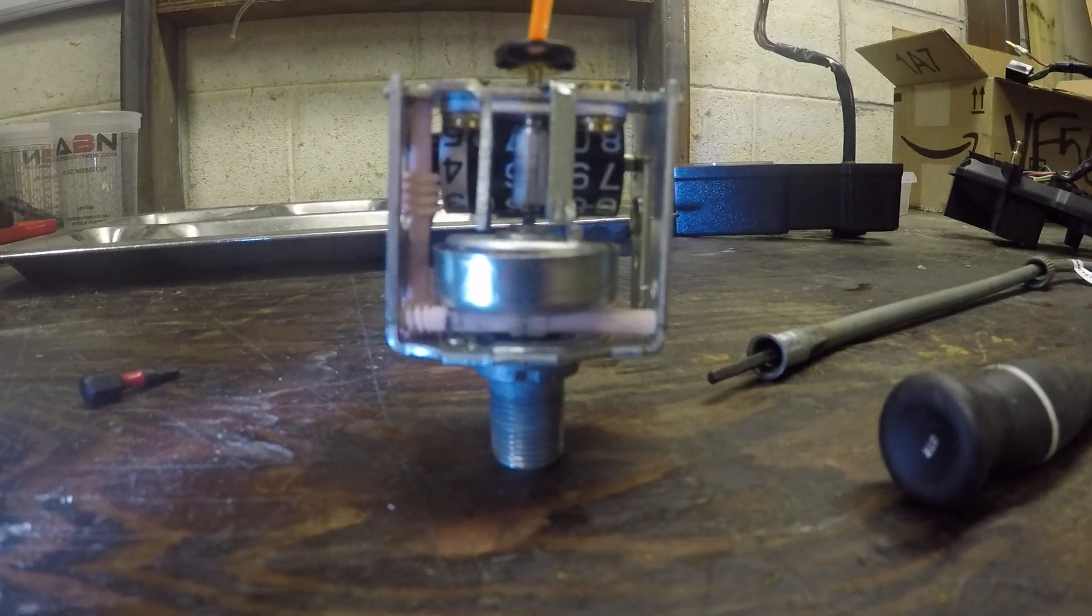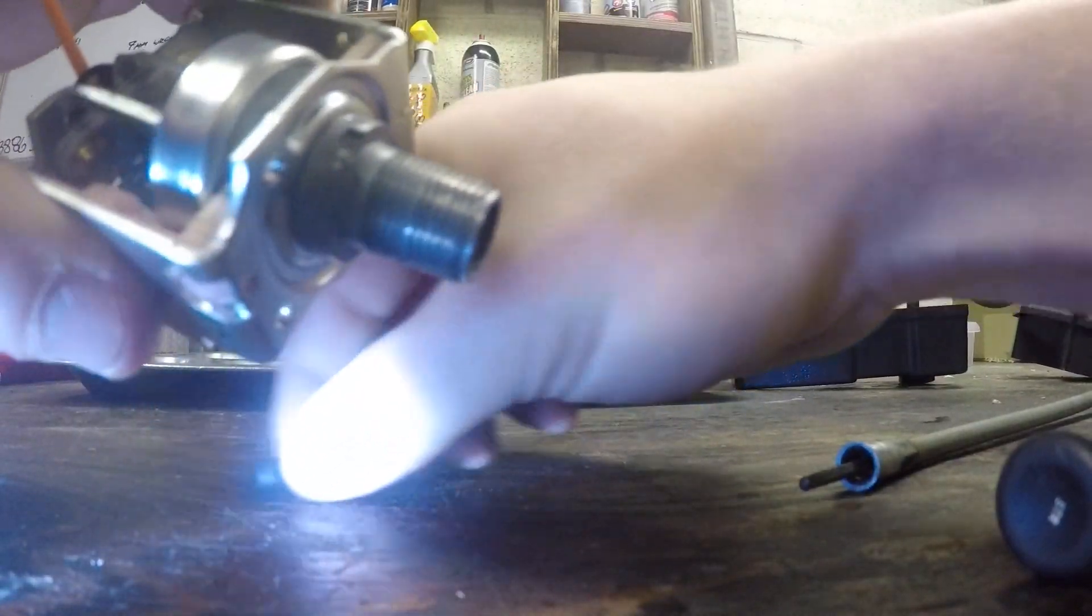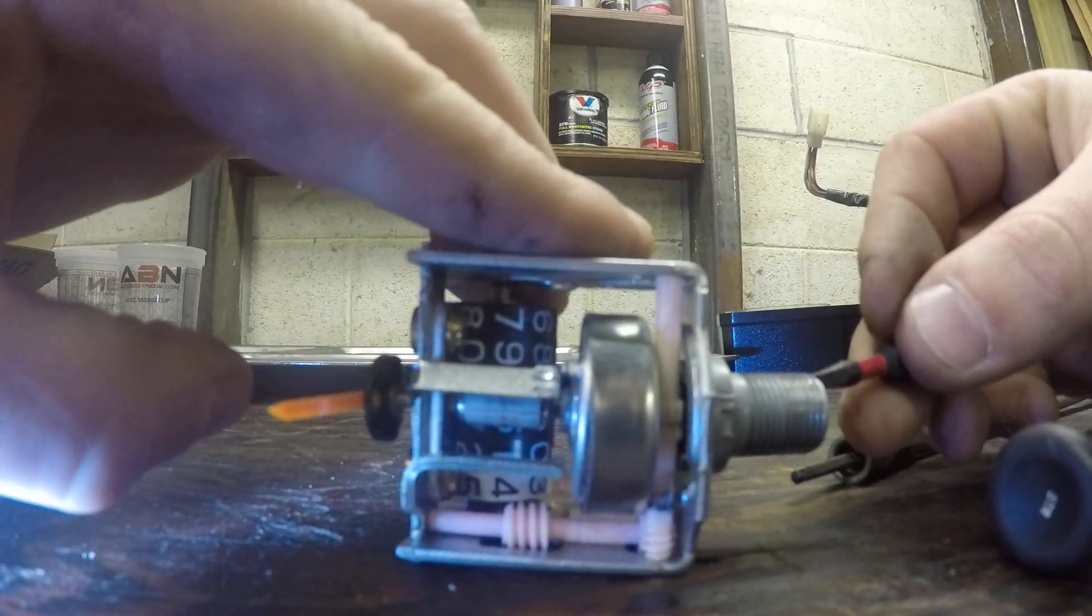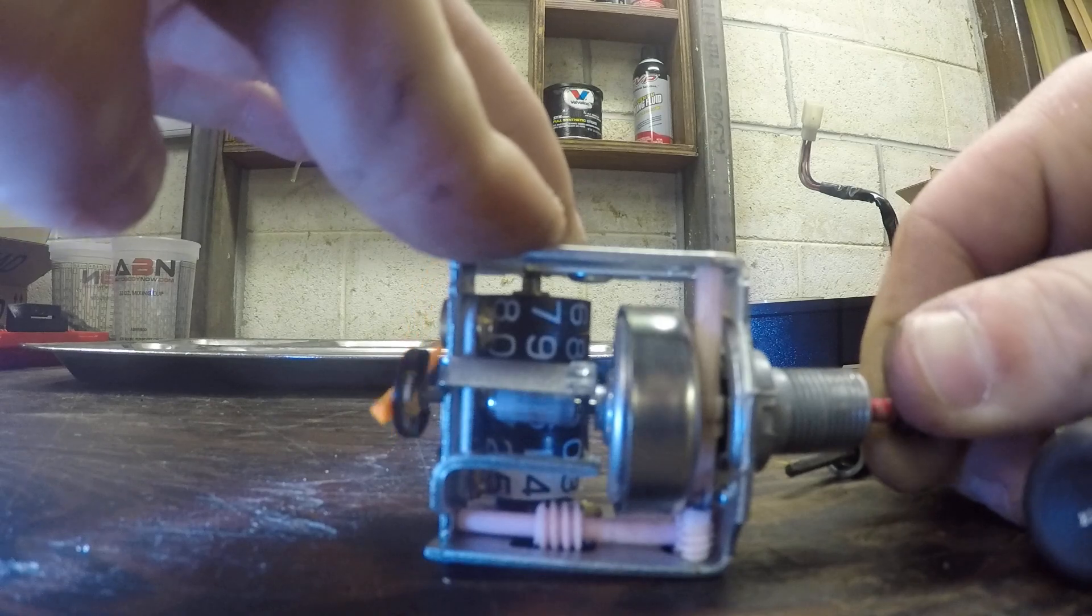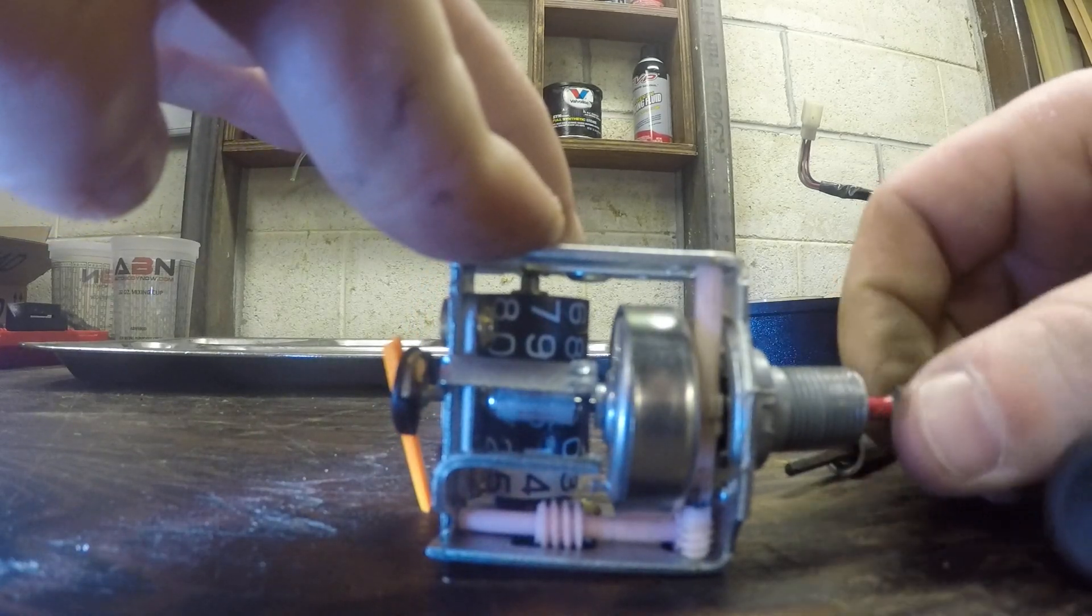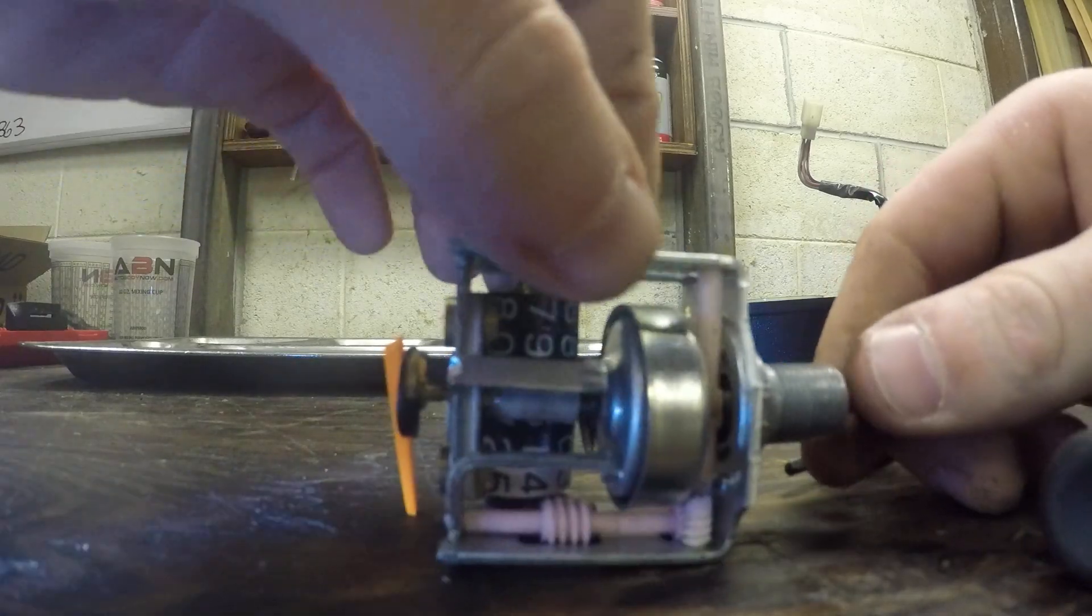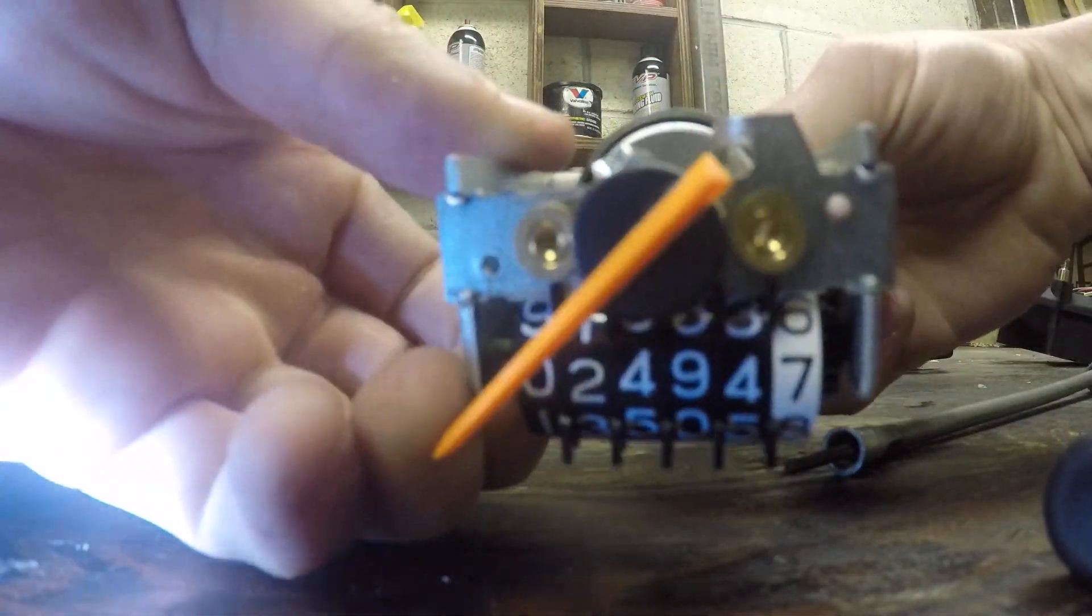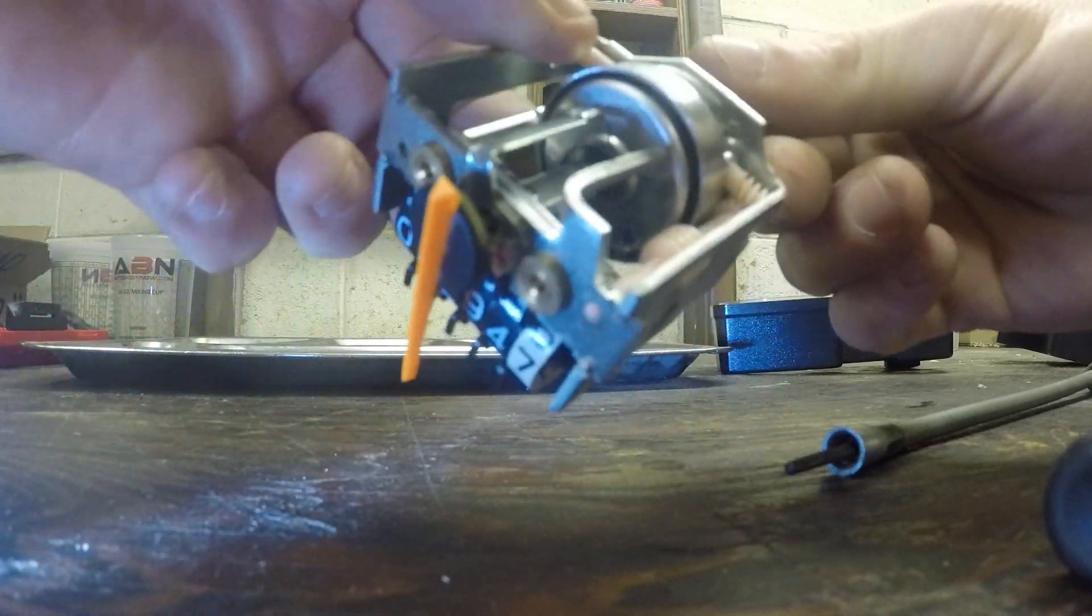When I spin the speed cap around it, it shouldn't move the whole thing, yet it is. So that is why this thing goes all wonky. This shouldn't be spinning like this. It's touching, and it shouldn't be.